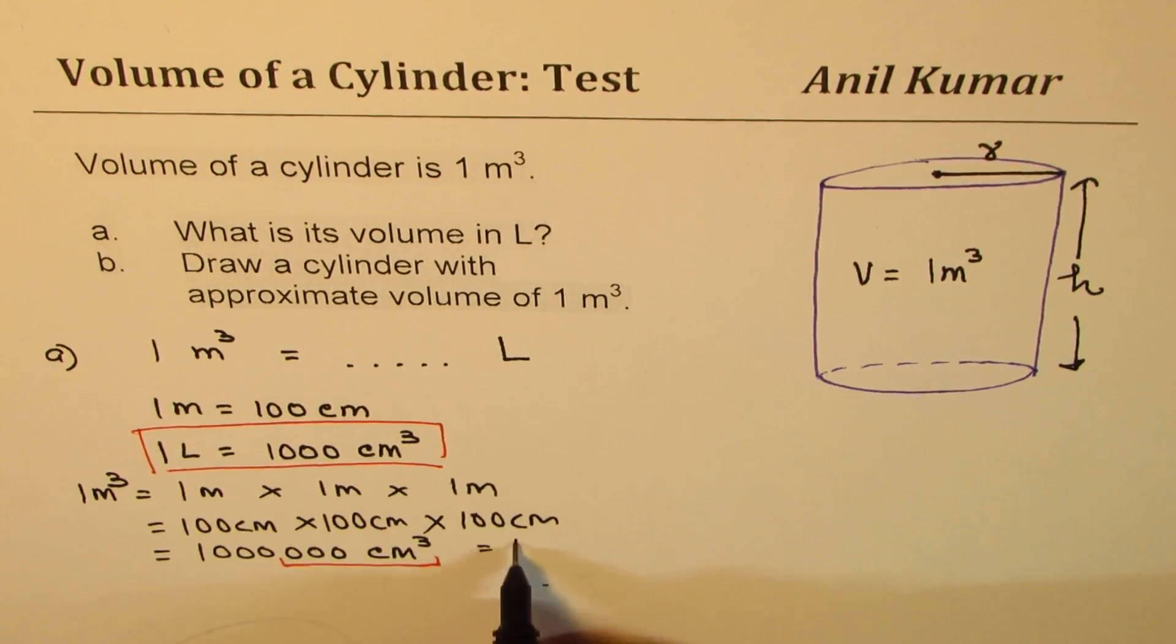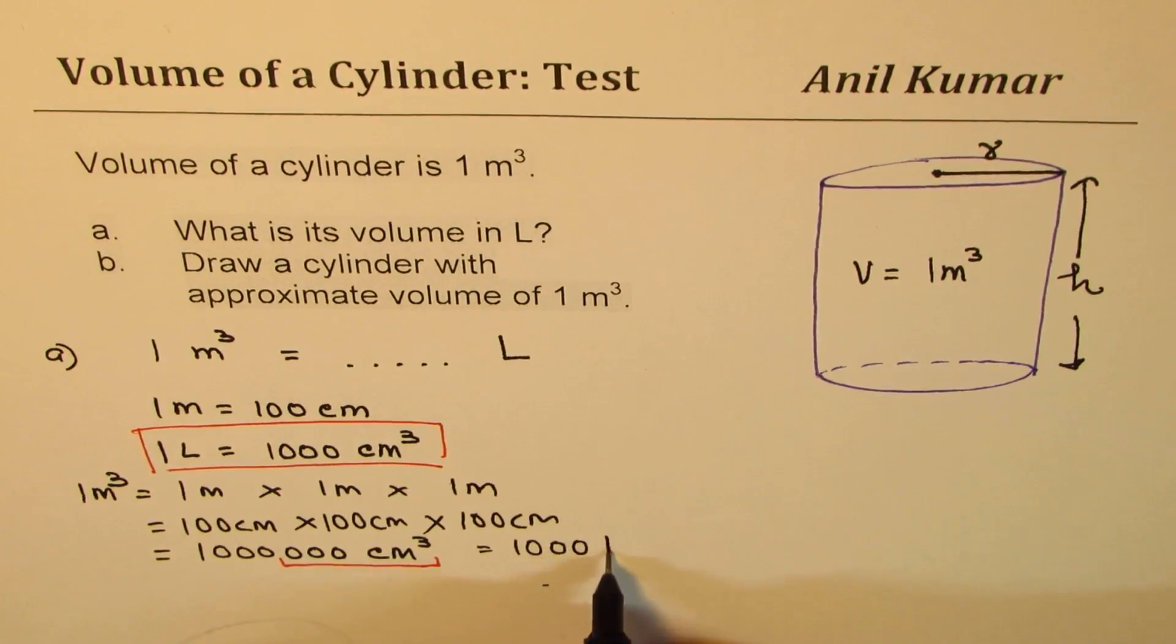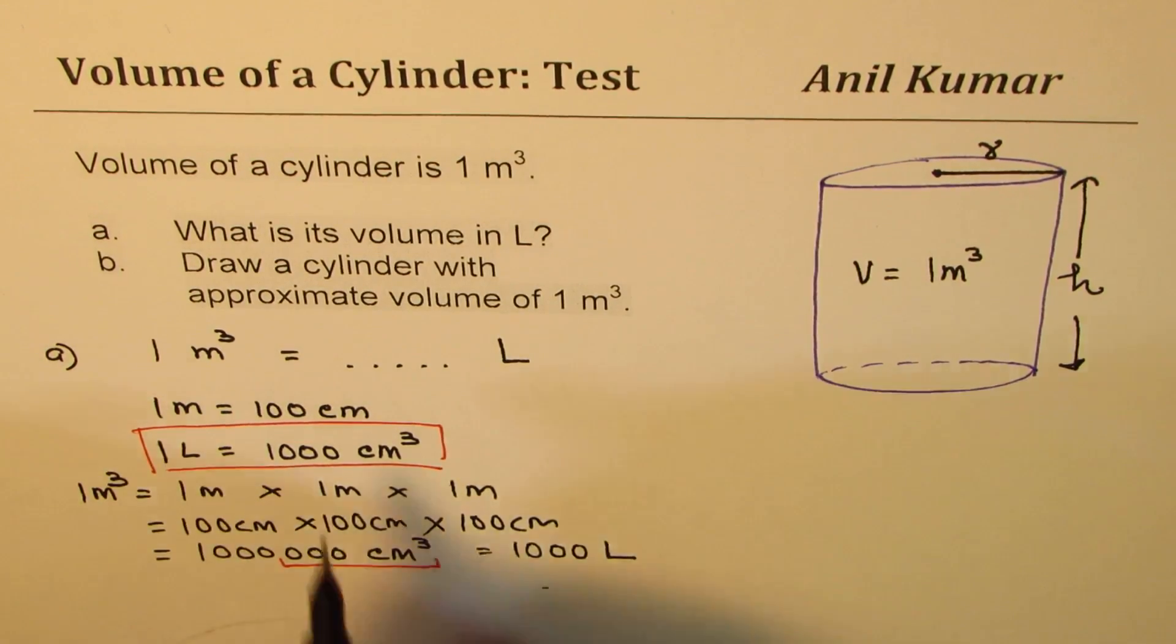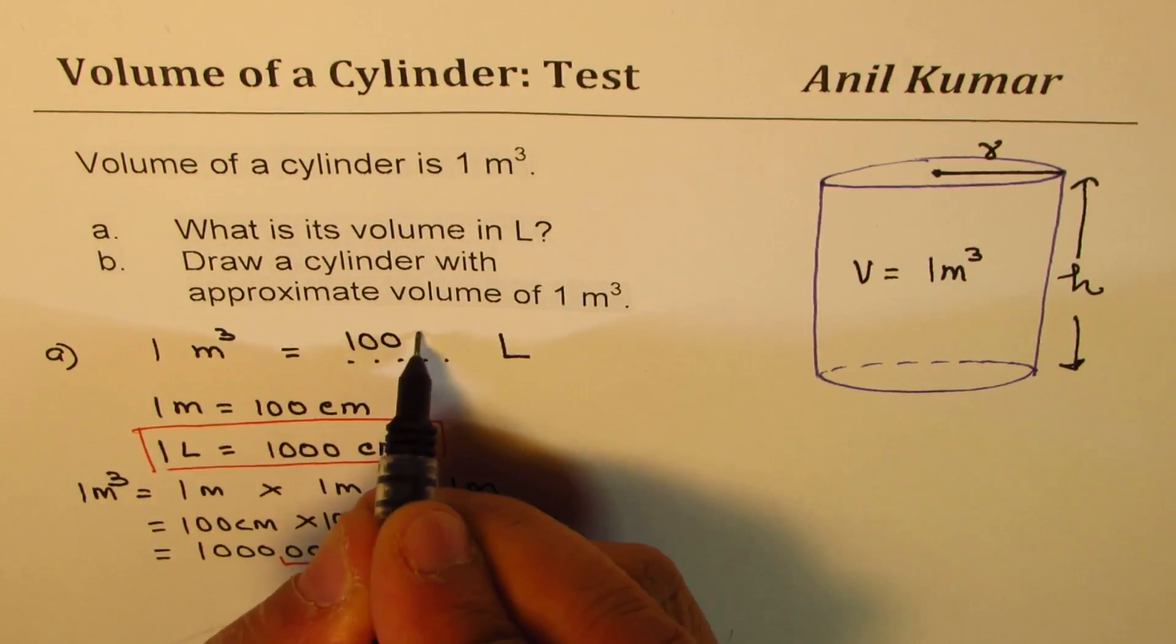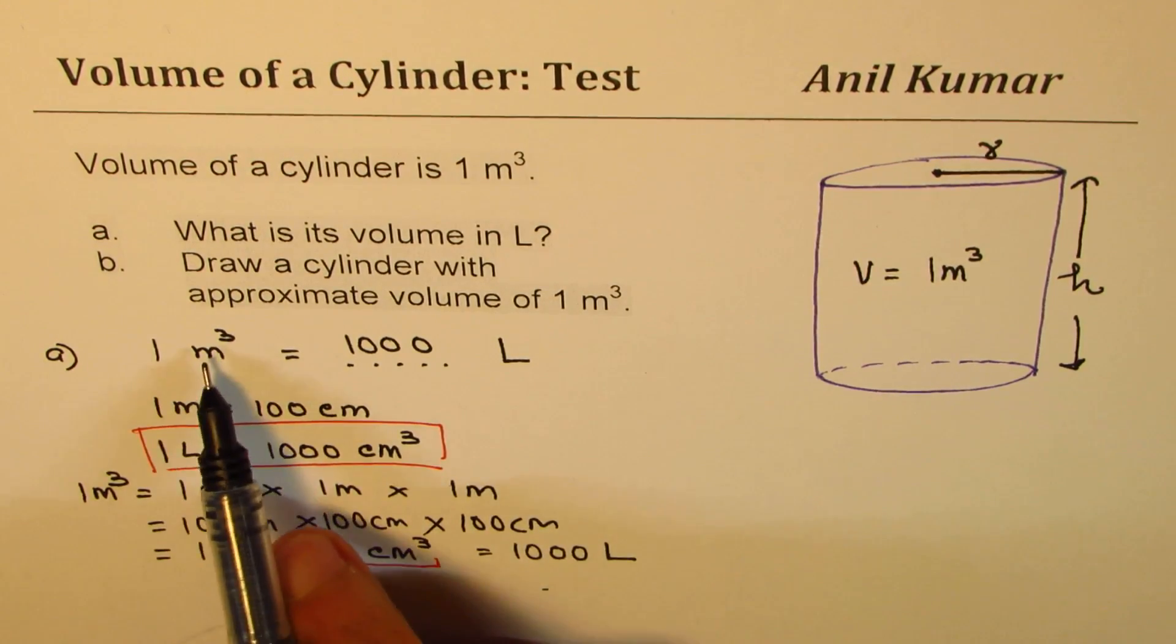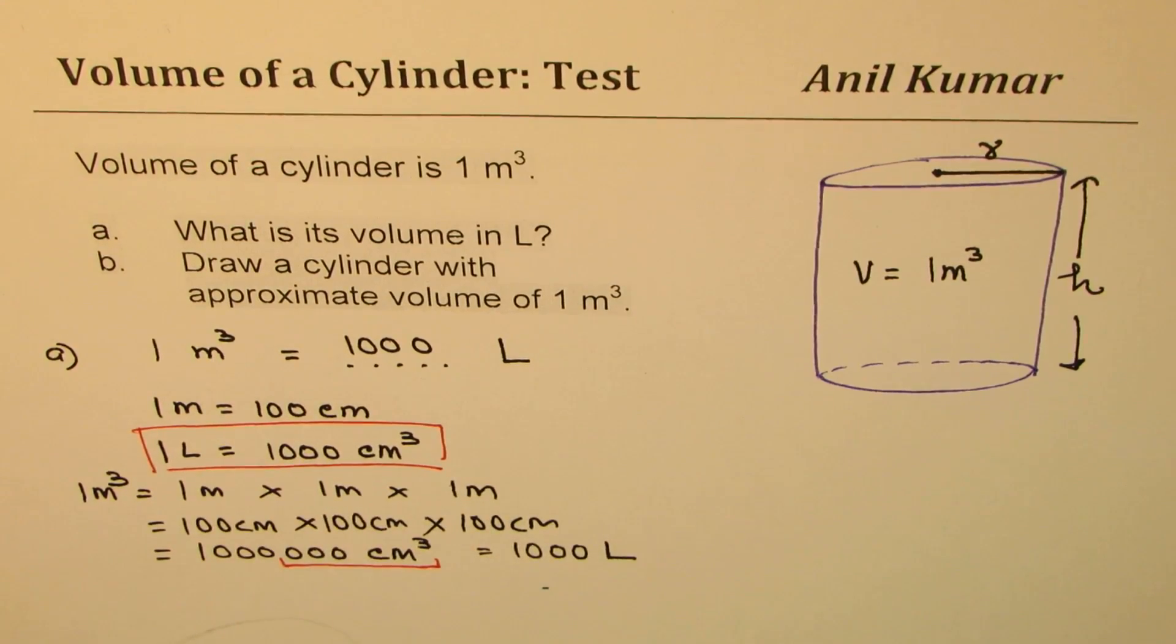So what we get here is 1000 liters. Because 1000 centimeter cube is one liter. So we get one meter cube is equals to 1000 liters. You get an idea. So that is how you can get conversion of meter cube to liters. That is very important.